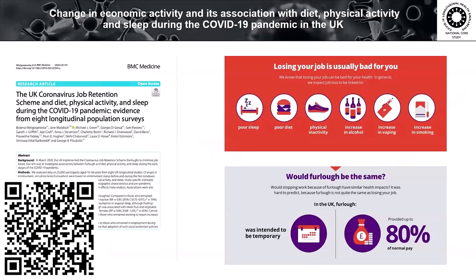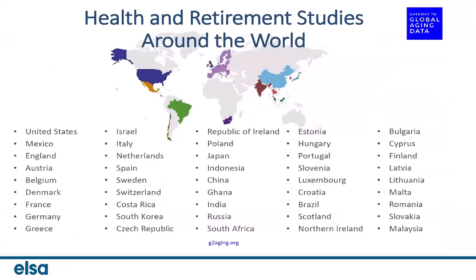Another strong example of studies coming together came during the pandemic. Many in my team, including Bettina, were involved in the National Core Studies Programme that used multiple cohorts to answer important questions quickly, including around the impact of furlough. There are also many amazing international efforts, such as the Global Aging Gateway that brings together health and retirement studies around the world.